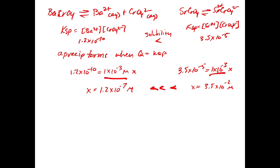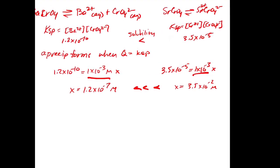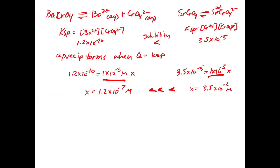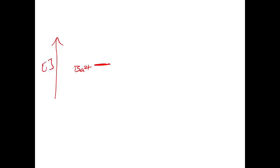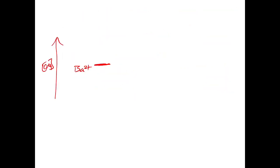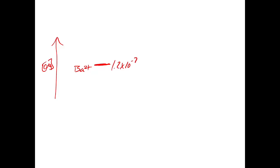Let's think about what's going to happen. As we add chromate (increasing its concentration), barium is going to precipitate when we reach 1.2×10⁻⁷ M chromate. Way up at 3.5×10⁻² M, the strontium will precipitate. So we draw a graph with chromate concentration on one axis.